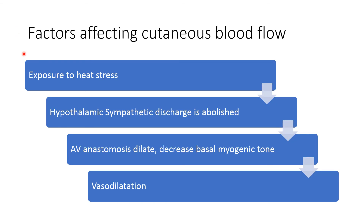When the body is exposed to heat stress, sympathetic discharge decreases. This leads to a decrease in basal myogenic tone or vasoconstrictor tone in skin vessels, causing vasodilation of vessels and AV anastomoses. Vasodilation increases blood flow to the skin, and this increased blood flow leads to heat loss from the body.